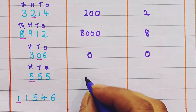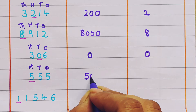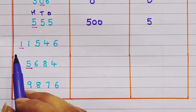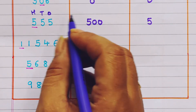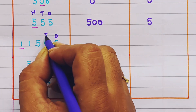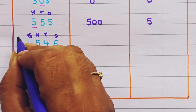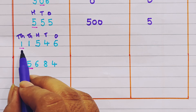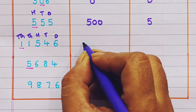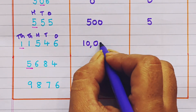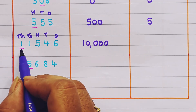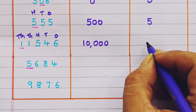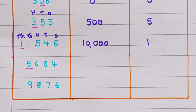Next: 555 — ones, tens, hundreds. 5 is present in the hundreds place, so the place value will be 500 and the face value will be 5. Now 11,546 — let's give the places: ones, tens, hundreds, thousands, ten thousands. 1 is present in the ten thousands place, so the place value will be ten thousand and the face value will be 1.